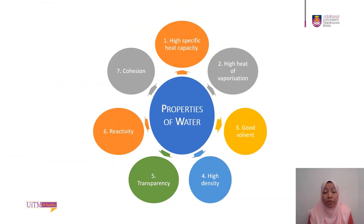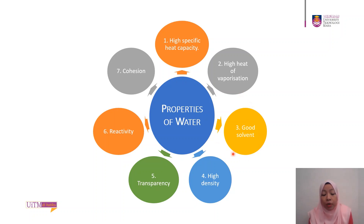So the properties of water — there are seven properties. The first is high specific heat capacity. Water also has high heat of vaporization, and water is a good solvent. Water has high density, water is transparent, we will look at the reactivity of water, and the last one is cohesion behavior.